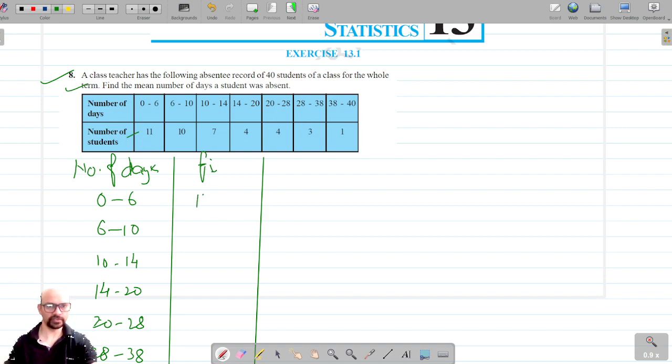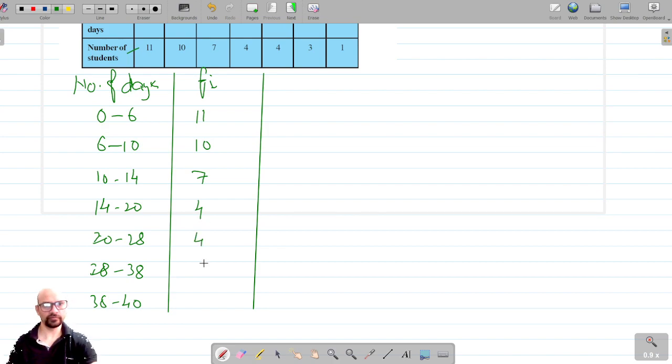Now the frequency is the number of students, which are 11, 10, 7, 4, 4, 3, and 1. Now we are going to find out the class marks.